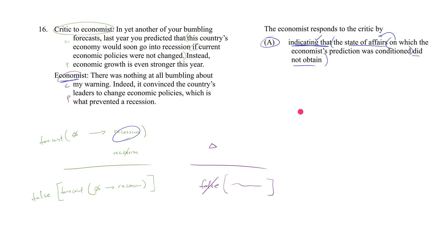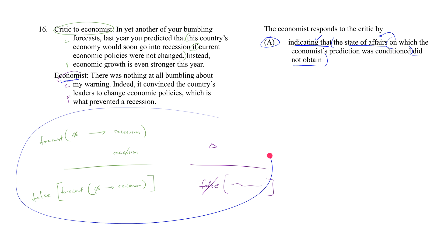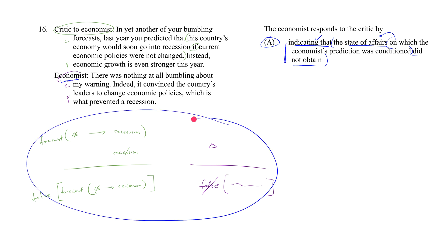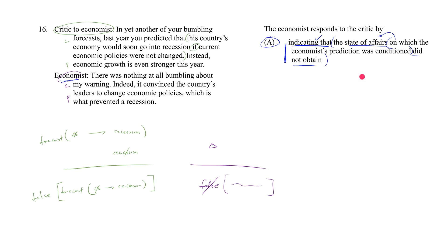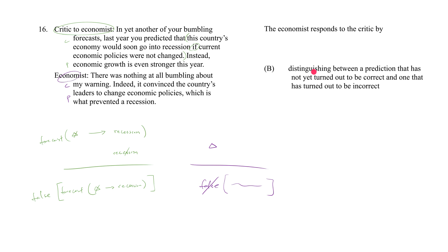Even though reading through this you might have a good understanding of what's going on, the outside writers describe events in super abstract and removed language, intentionally hiding the fact that A is the right answer. Let's look at B, which says: 'distinguishing between a prediction that has not yet turned out to be correct and one that has turned out to be incorrect.'